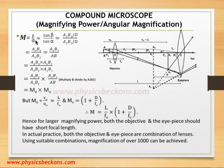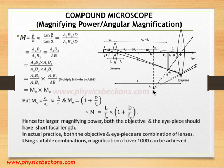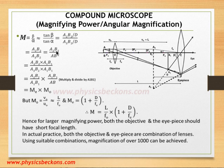So M is beta over alpha. Since the object is small — we are using a compound microscope to see very minute objects — the angles beta and alpha can be replaced by their trigonometric tangents. So M is nearly equal to tangent beta over tangent alpha. From the diagram, tangent beta is A2B2 over B2E, where B2E equals capital D, so tangent beta equals A2B2 over D. And tangent alpha equals A3B2 over D. D cancels out, giving the ratio A2B2 over A3B2, which, replacing A3B2 by AB, gives M equals A2B2 over AB.